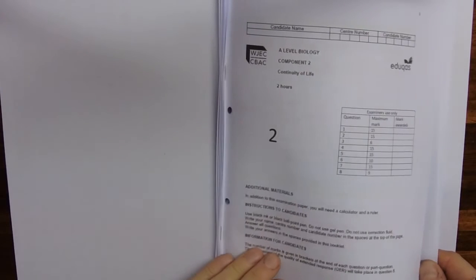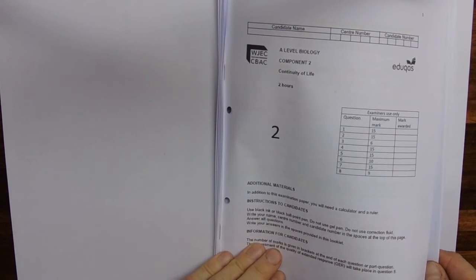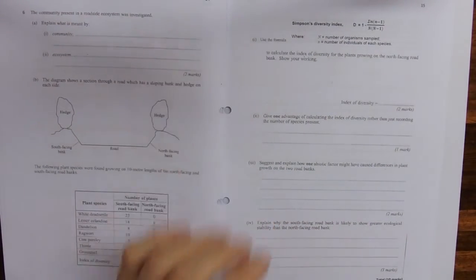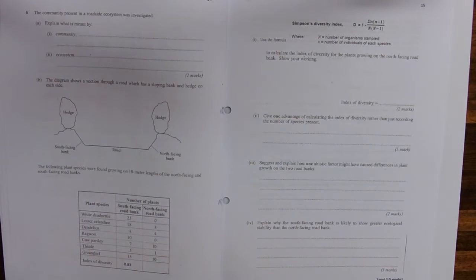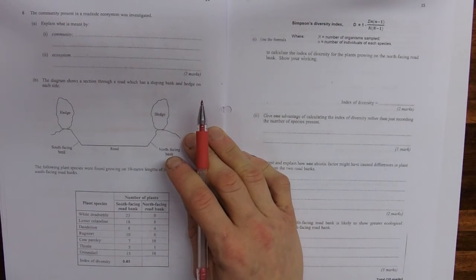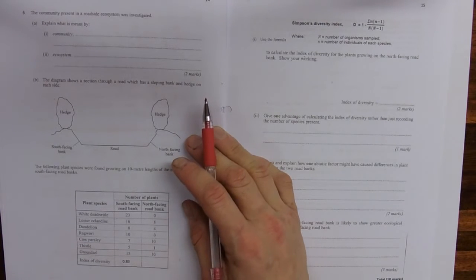We are on component 2 of the Holy Cross Mocks and this is Mock 2 and we're on to question 6. The community present in a roadside ecosystem was investigated. What is meant by a community and ecosystem? Lots of strange answers here.